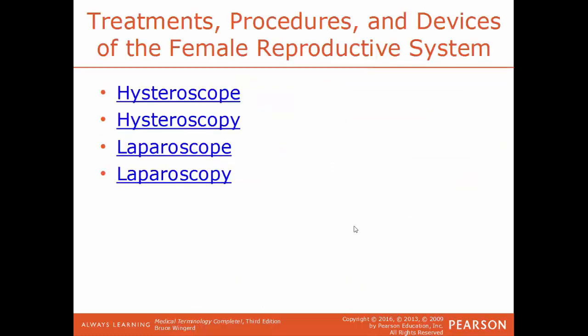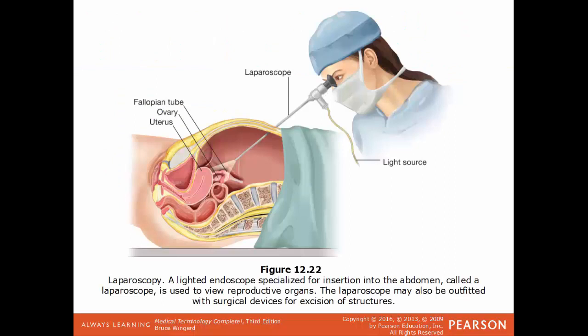The hysteroscope is a tool used to visualize the uterus — the process of viewing the uterus is hysteroscopy. The laparoscope is a tool used to visualize the abdominal wall — the process of viewing those structures is laparoscopy. Here's an example of laparoscopy: the laparoscope is inserted into the abdomen, where you're able to view the abdominal organs and the abdominal wall.